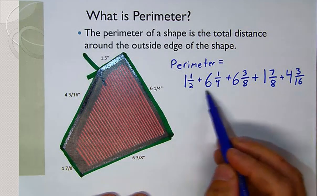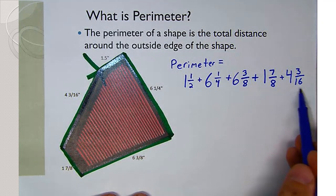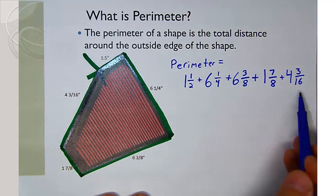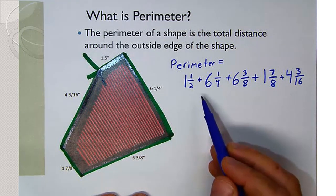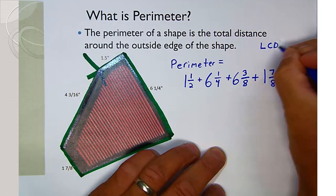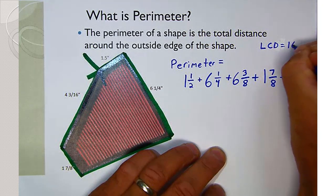A little refresher on adding fractions: what do we need to do before we can add these together? We need a common denominator, and so our LCD here is going to be sixteenths of an inch.